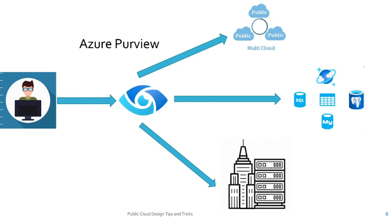Azure Purview does more than that as well. It is the solution which has been provided to do data governance across your on-premise, Azure native services, or multi-cloud services like AWS or Google Cloud. With a single pane of portal, you can govern your data regardless of its current location — whether it is on-premise, cloud, or Azure cloud services. That is the power of Azure Purview.